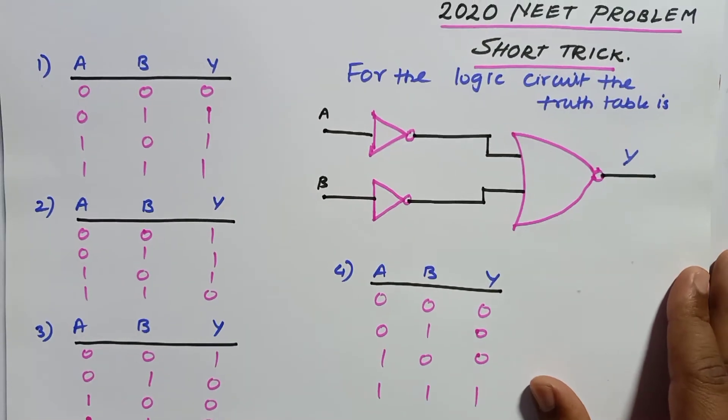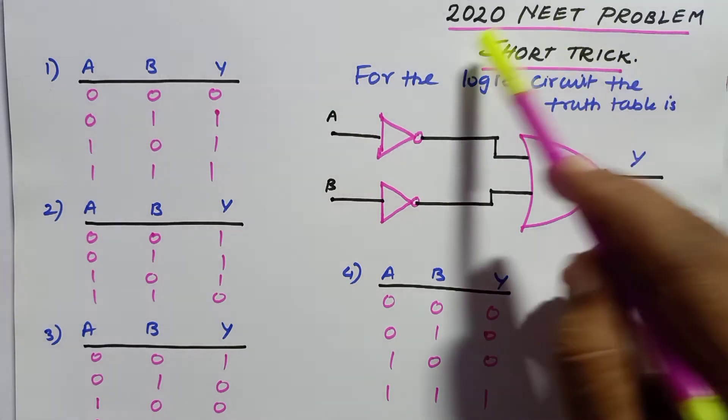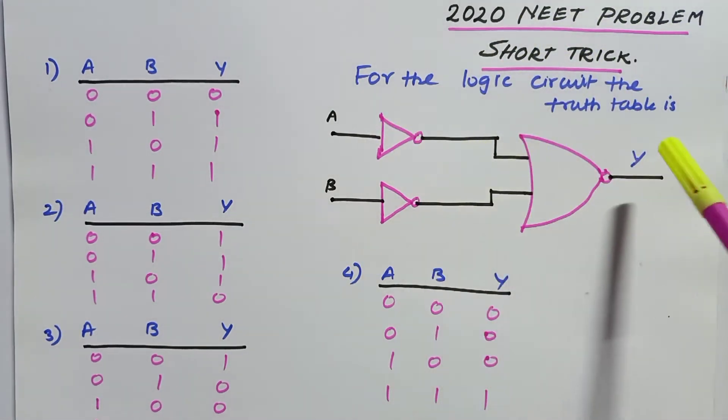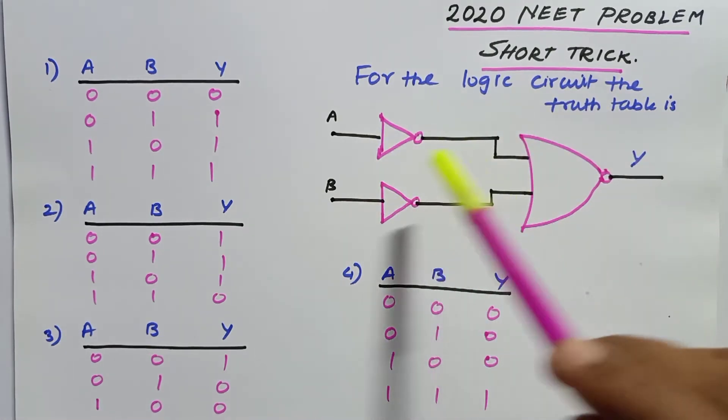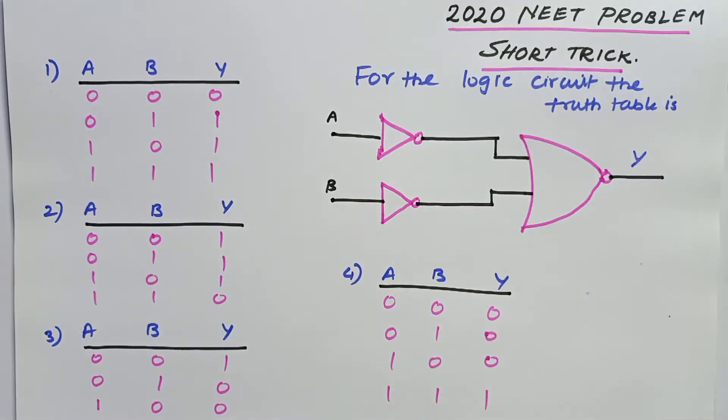Today we'll discuss a shortcut trick for a problem from the 2020 NEET exam. For the given truth table, we have to find out which is the correct truth table. To find the correct truth table, you don't need to test all four cases - testing only two cases is more than enough.